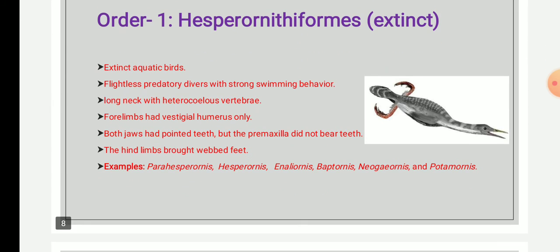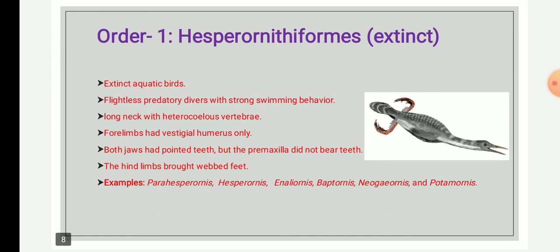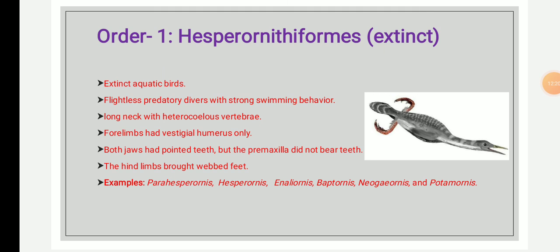Super order Odontognathae is divided into different orders. Order 1 is Hesperornithiformes, and these are extinct. The members were extinct aquatic birds that inhabited both freshwater and marine habitats in the northern hemisphere. They were flightless predators which performed strong diving and swimming behavior. Their body size could reach a maximum length of over 1.5 meters.